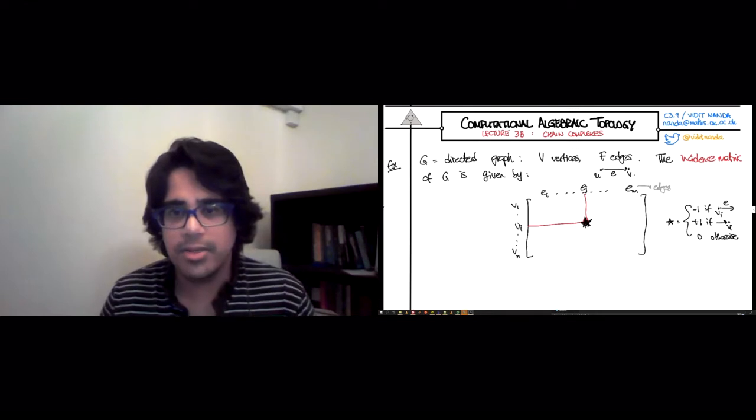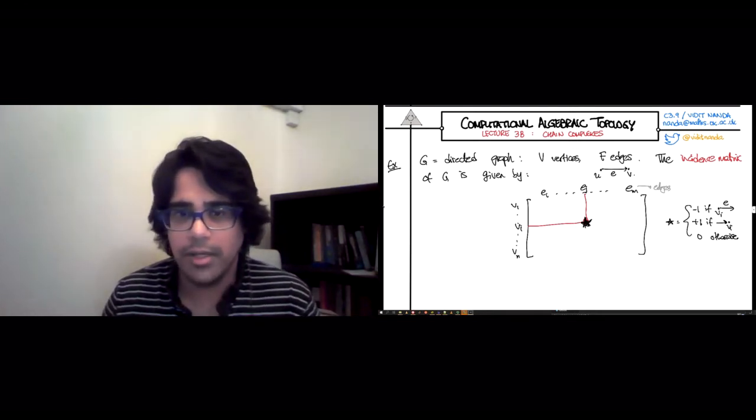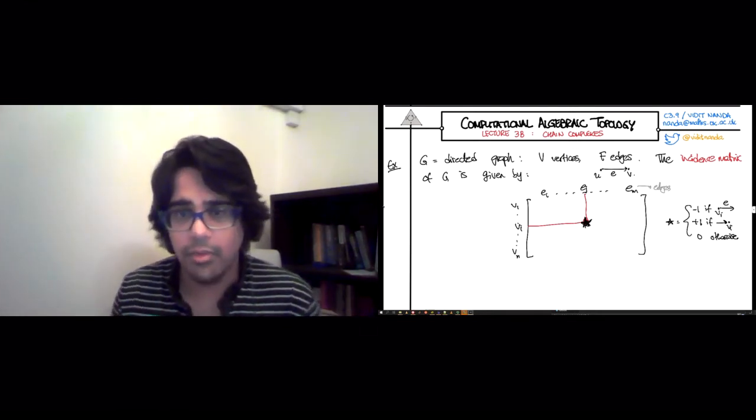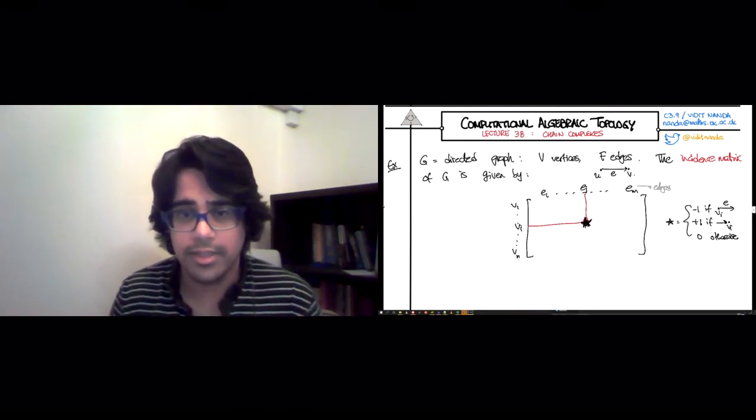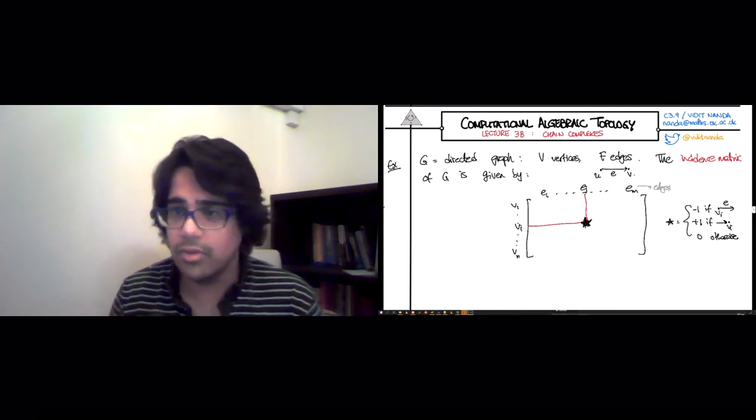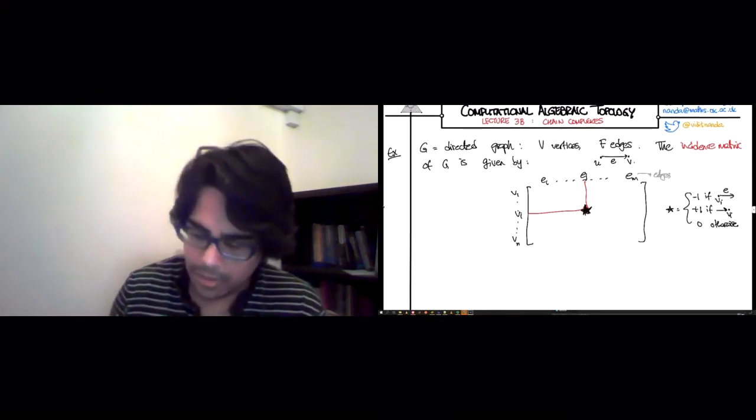So it's just a matrix filled with 0, plus 1, or minus 1. You get a minus 1 if the vertex in the row is the source of the edge in the column. You get a plus 1 if it's the target. And otherwise, if they don't touch at all, then you just get a 0.